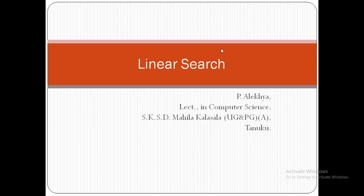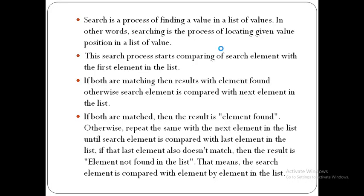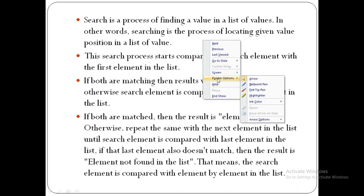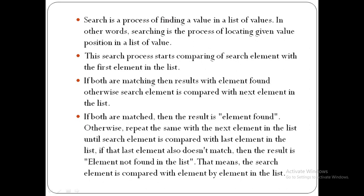Linear search is one algorithm for finding an element. First of all, we are going to learn what search is. Search is a process of finding a value in a list of values — from that list of values, we are going to find a single desired value. Search is the process of locating a given value's position in the list of values.